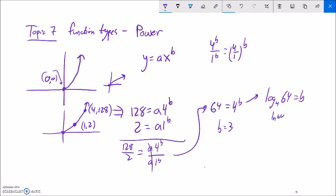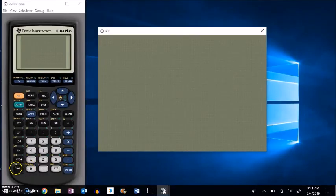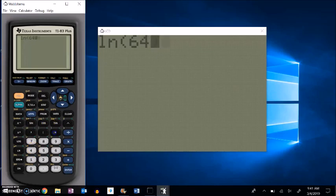And then from here, you can use that change of base formula. Natural log of 64 divided by natural log of 4. And let me do that here. So natural log of 64, close off the parentheses, divided by natural log of 4. And the answer is 3.